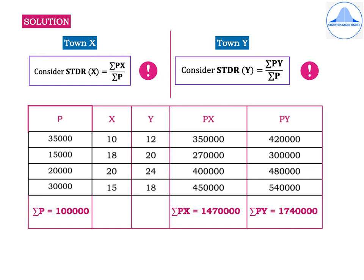For town X, the STDR formula is: STDR(X) = ΣPX / ΣP. For town Y: STDR(Y) = ΣPY / ΣP, where P values are the standard population and X and Y denote the ASDR values. The P values are 35,000; 15,000; 20,000; and 30,000, giving ΣP = 1,00,000. The PX values are 3,50,000; 2,70,000; 4,00,000; and 4,50,000, giving ΣPX = 14,70,000. The PY values are 4,20,000; 3,00,000; 4,80,000; and 5,40,000, giving ΣPY = 17,40,000.